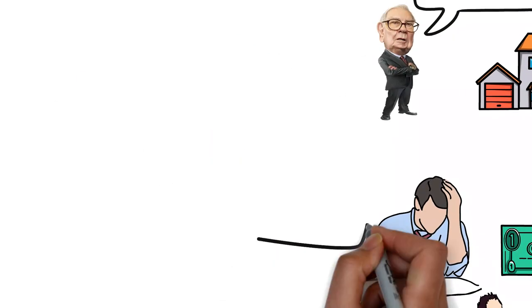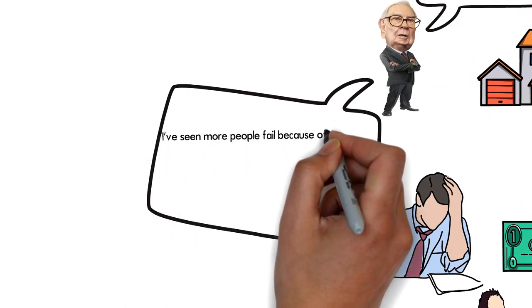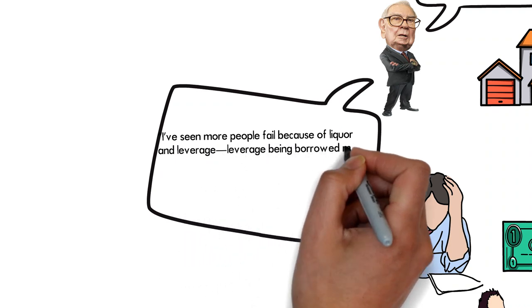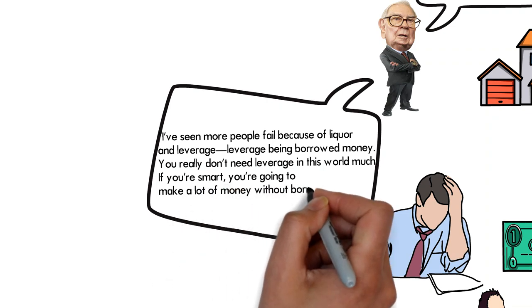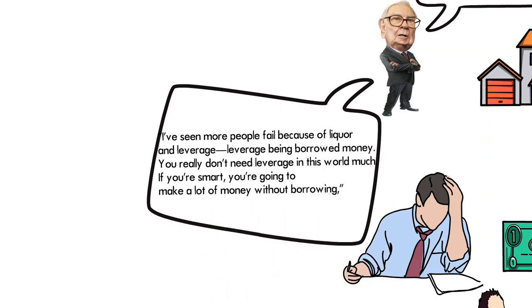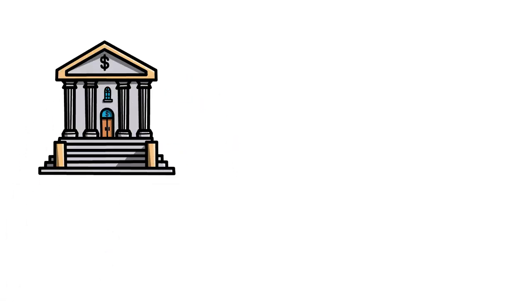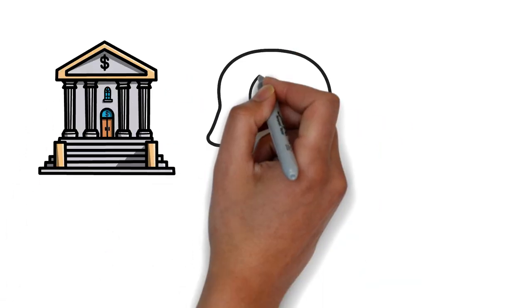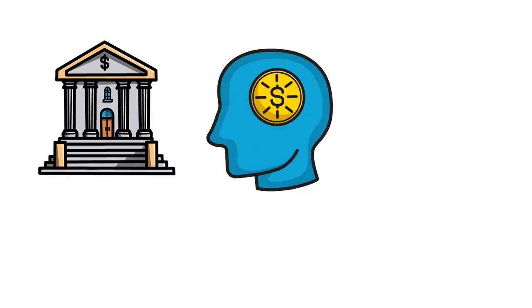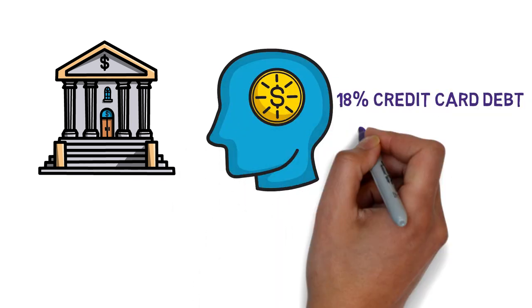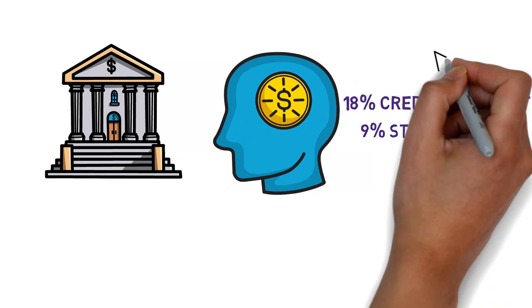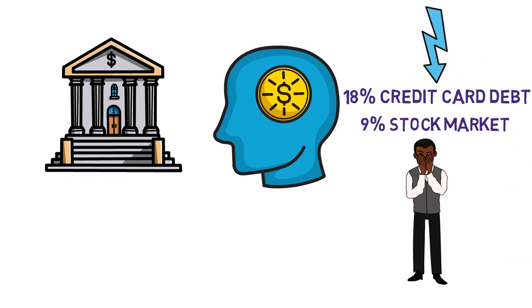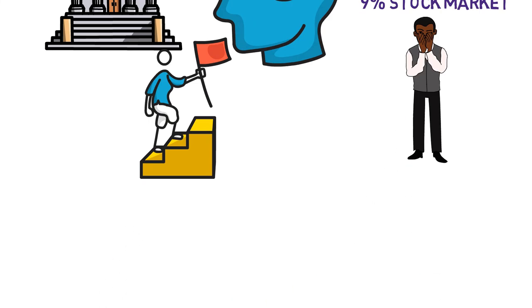Buffett doesn't hate debt, but recommends using it wisely. Although the quote is about borrowing money to invest, the principle applies to any type of debt. If you pay 18% interest on your credit card debt and earn 9% on your stock market investment, you are actually losing 9%. Make a plan to eliminate credit card debt as soon as possible in order to move toward wealth and prosperity.